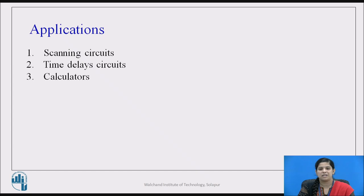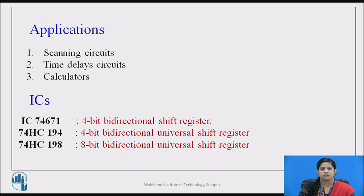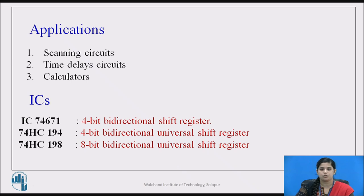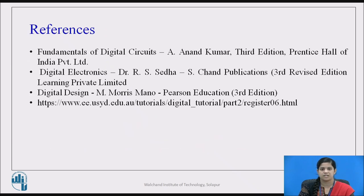Here are some applications of N-bit BSR. An N-bit BSR can be used in scanning circuits, time delay circuits, and calculators. Some relevant ICs are: IC 74671 is a 4-bit bidirectional shift register; IC 74HC194 is a 4-bit bidirectional universal shift register; and IC 74HC198 is an 8-bit bidirectional universal shift register. These are some references.